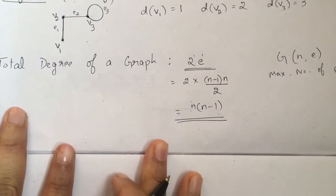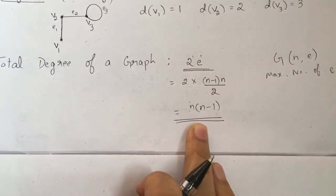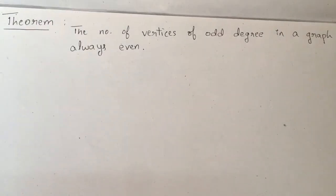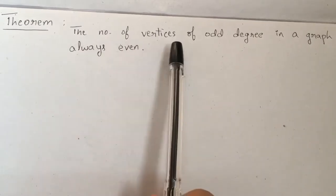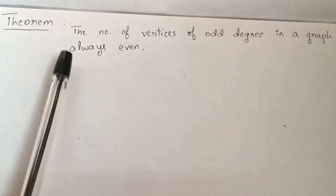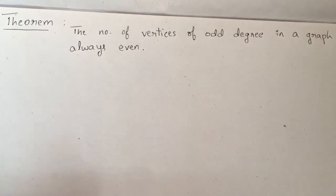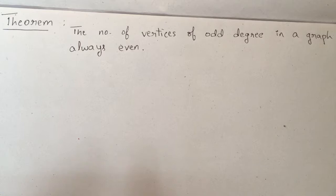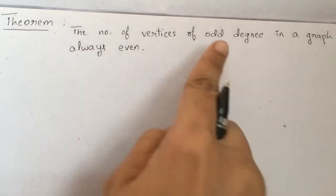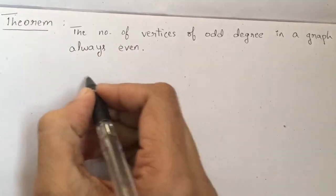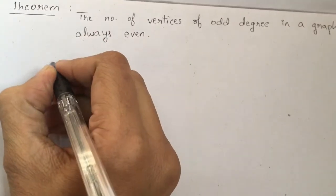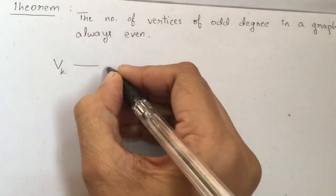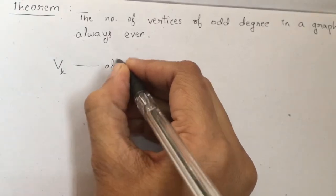Next is a theorem which states that the number of vertices of odd degree in a graph is always an even number. In any graph, there are vertices with odd degree and vertices with even degree. The theorem states the number of vertices having odd degree is even. Consider the set of all vertices vk — this represents all vertices of the graph.